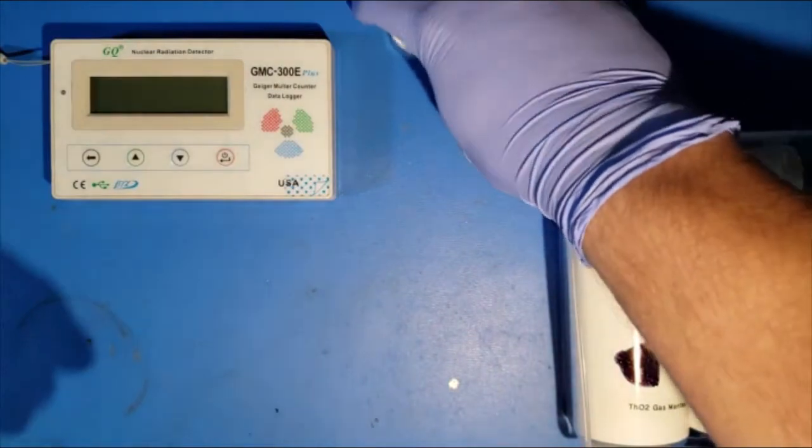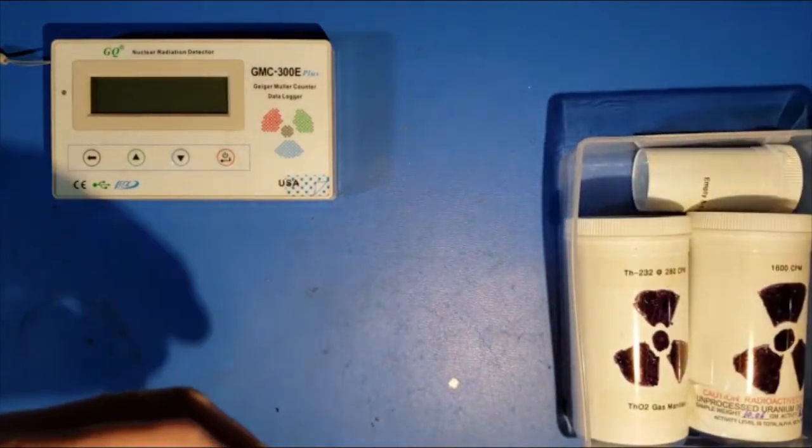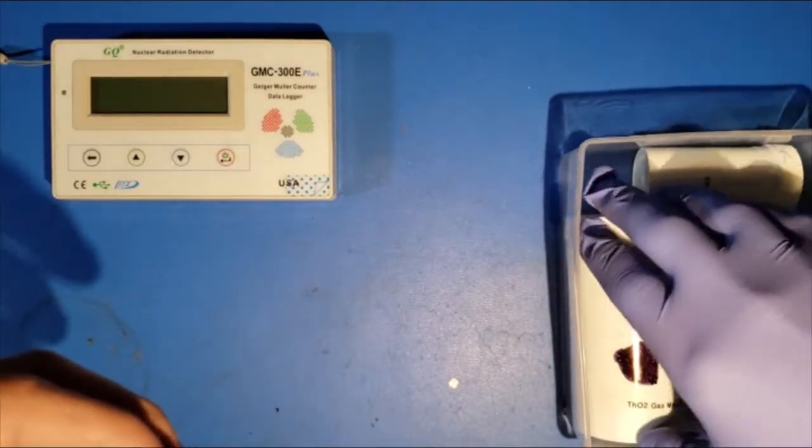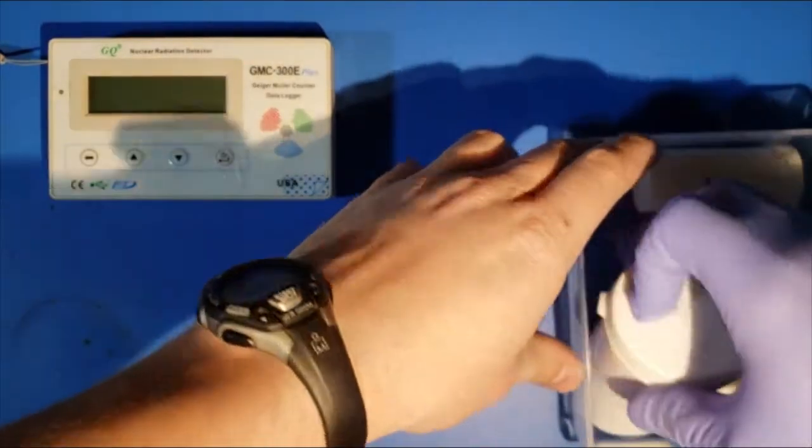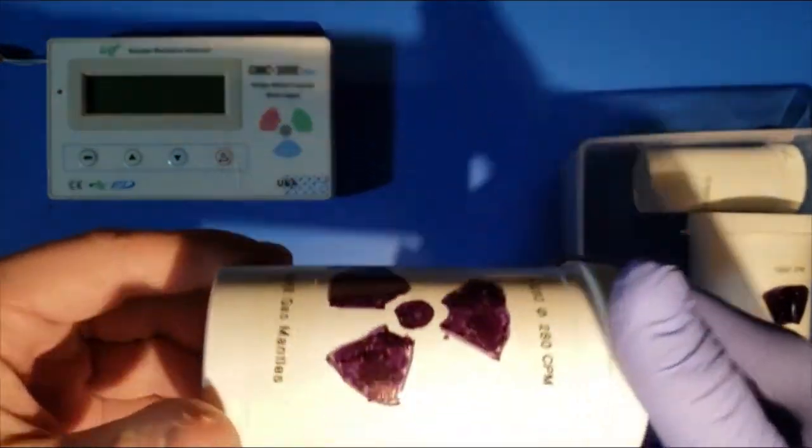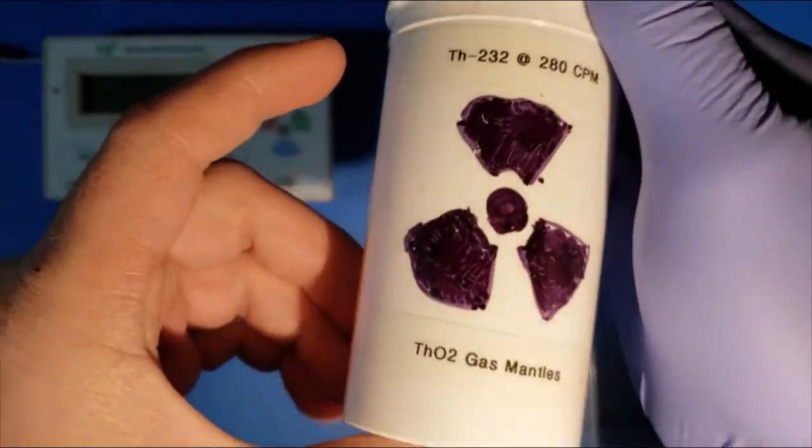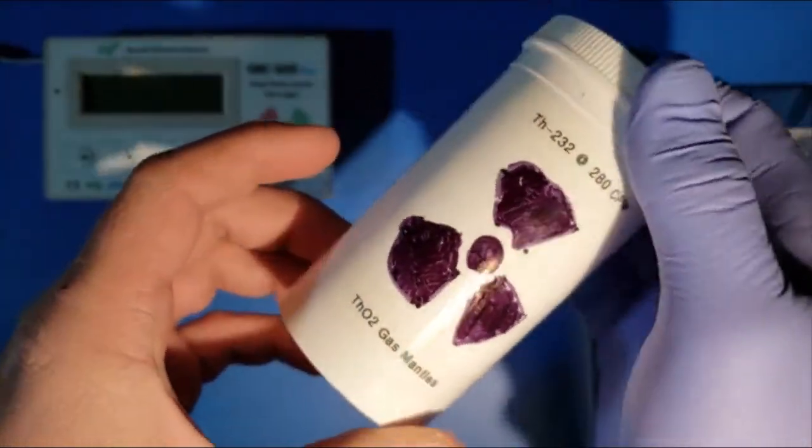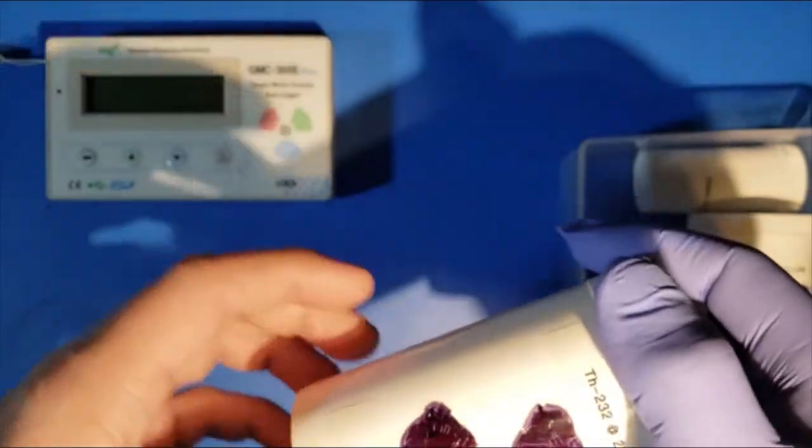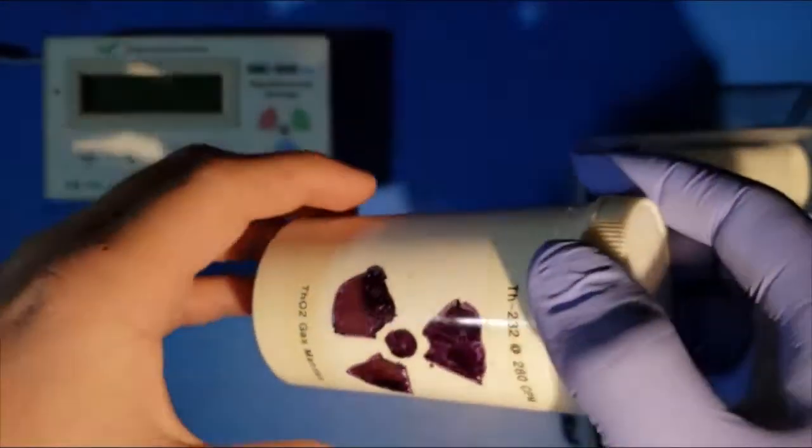So moving on from alpha sources, you can get some other samples that aren't too too hot. So thorium gas lamp mantles. They use thorium dioxide in gas mantles for propane lamps for the longest time in order to enhance the brightness of the lamps.